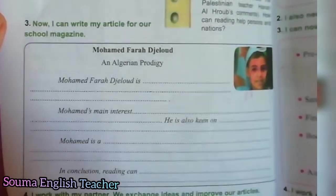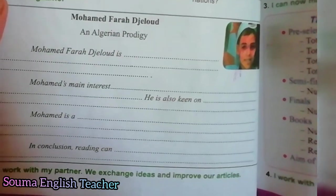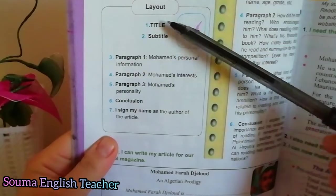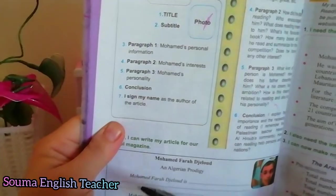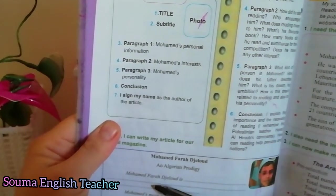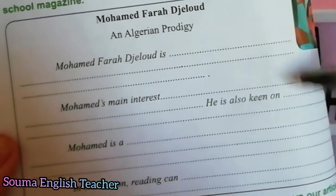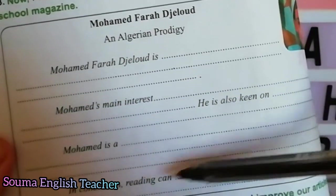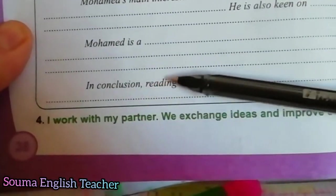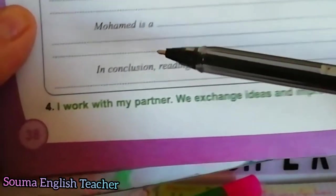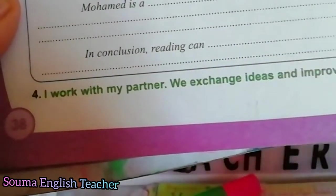Here is how to write the article. We can start now: 'Muhammad Farah Jellud — An Algerian Prodigy.' That is the title. The subtitle is the small description. Paragraph 1: Muhammad Farah Jellud is... [name, age, job, etc.]. Muhammad's main interest is what he likes and dislikes. In conclusion, reading can — we give it credit for what reading can do for personal and national development.